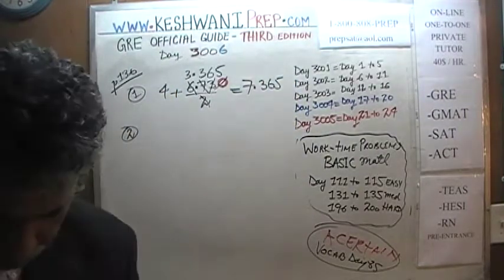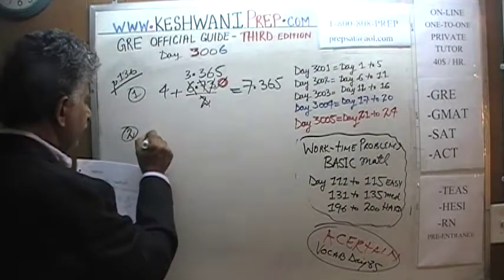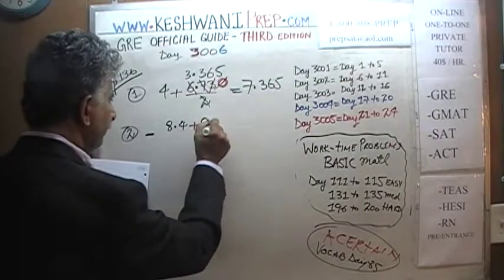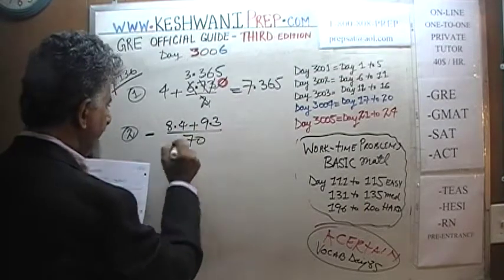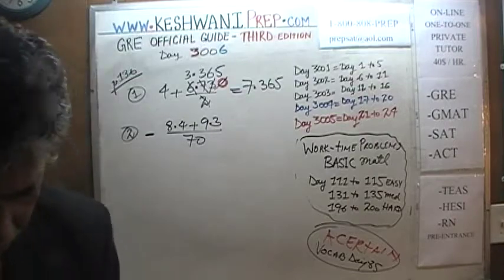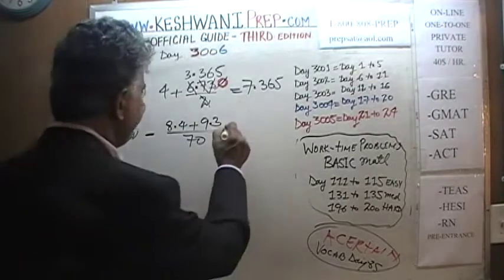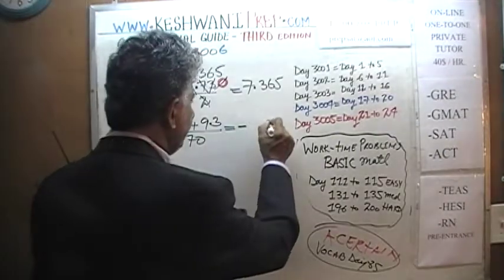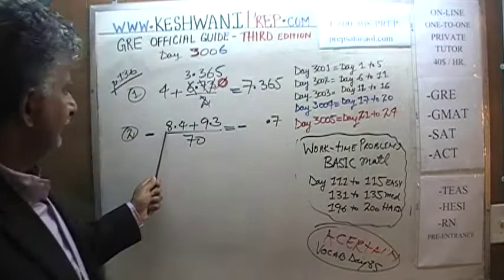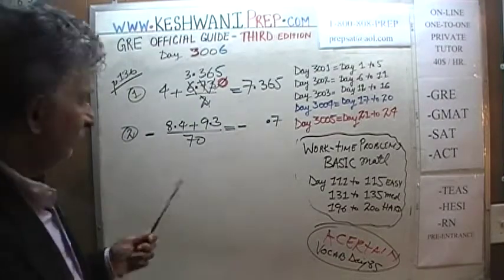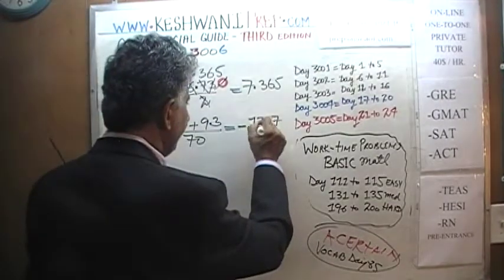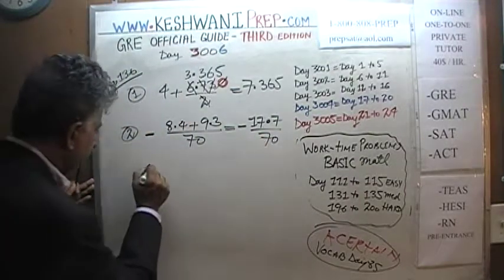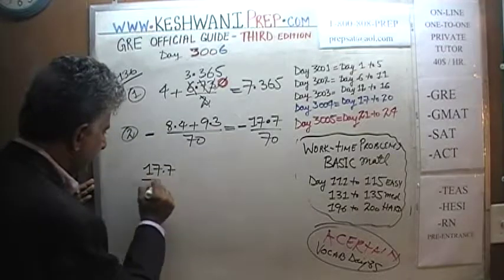Number 2 says: the negative of — don't forget the negative sign in front — negative of 8.4 plus 9.3 divided by 70. Let's see what we can do. Let's first add up the top part. Don't forget the negative sign in front. 0.4 and 0.3 is going to be 0.7. And 8 plus 9: 8 plus 8 is 16, so it's going to be 17. So it's 17.7 divided by 70.